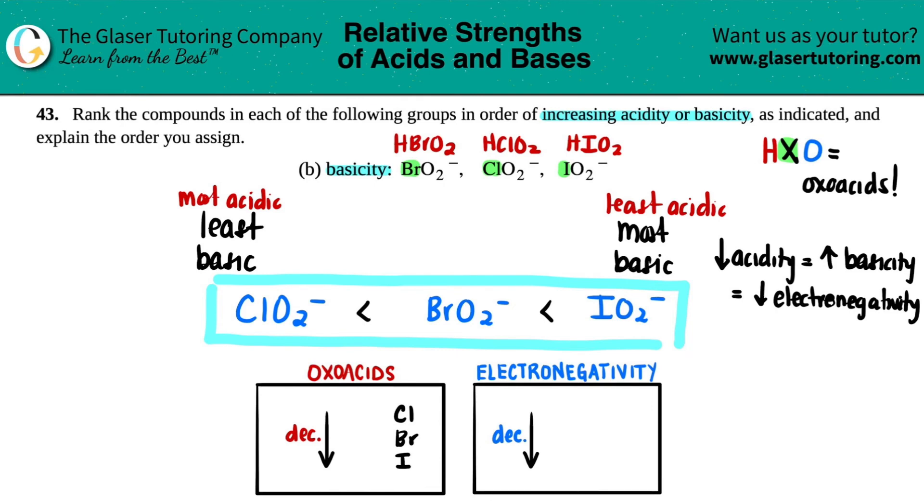Just to put it in perspective, your ClO2 minus is the most electronegative, and the iodine one would be the least electronegative, meaning the iodine versus the chlorine. Hopefully this helped, thank you so much, and I will see you all in later lessons.